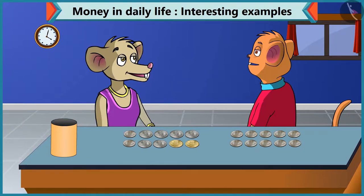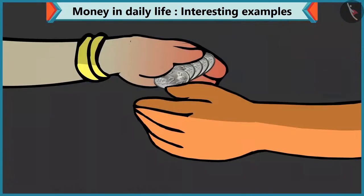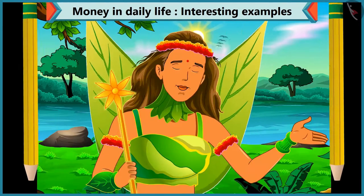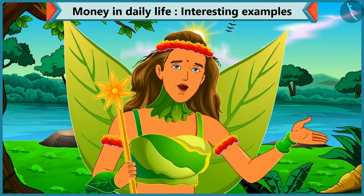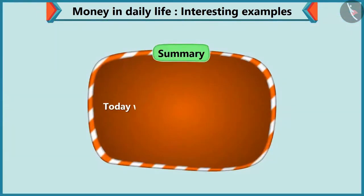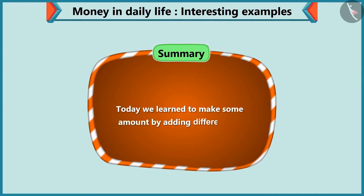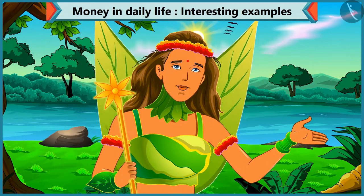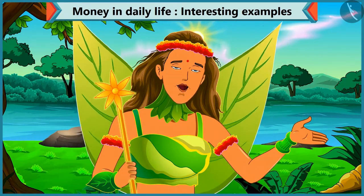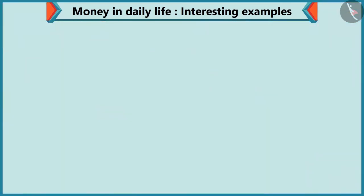Yes, Chichi, and here is for your new pen, 5 coins of 2 rupees, that is 10 rupees. Thanks, Chichi. Today, Chichi has learnt to make an amount by adding various coins with the help of Chuchu. So kids, today we learnt to make some amount by adding different coins. In the next video, we will learn to make an amount by adding notes and coins.